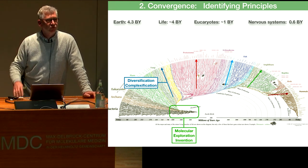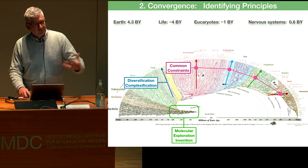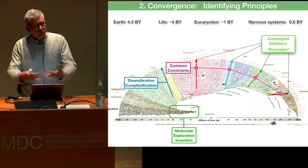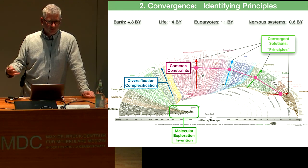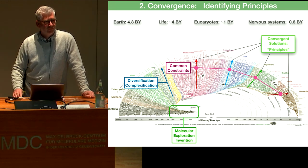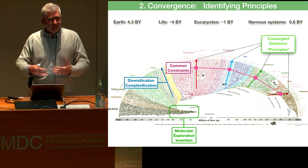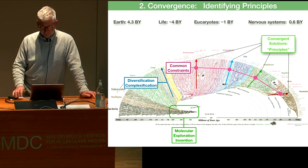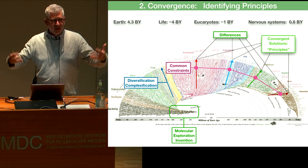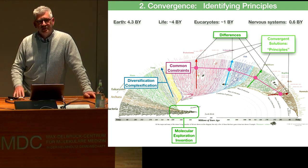Even if the implementation of solutions may differ, common constraints to the evolution of nervous systems lead in some cases to common solutions. I would posit that those common solutions represent the principles of neural science — how you solve a problem at some algorithmic level, independently of the implementation details. We're interested in those principles, and neural motion, this dynamics of neural circuits, is in a sense an illustration of this. The difficulty is to identify things that are common and might define principles.